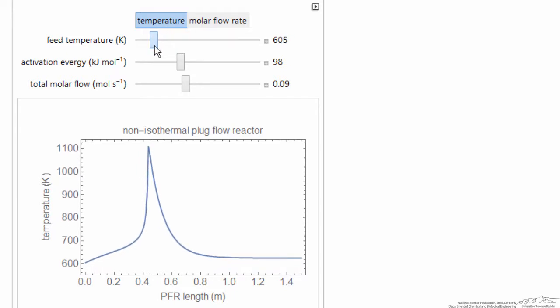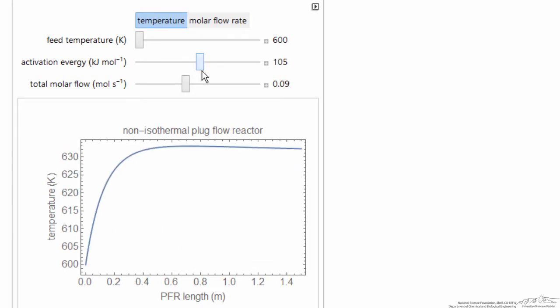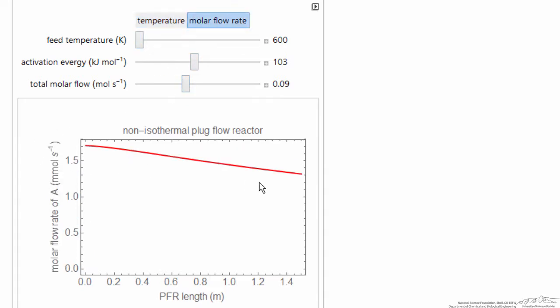As we decrease the feed temperature, we're still getting, in this case, a very large temperature increase. And so here's where the sensitivity is observed. As I change the activation energy for the reaction, notice the temperature only increases 40 degrees here, and that's reflected in a small amount of reaction. Looks like only about 20 percent is converted.